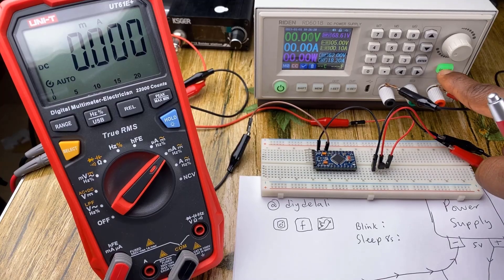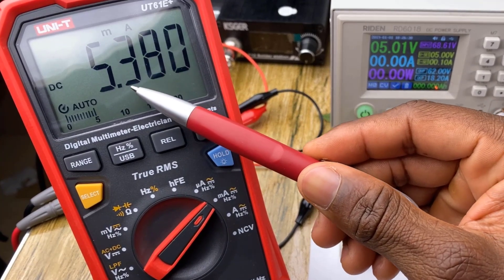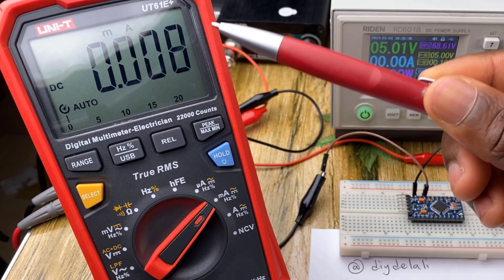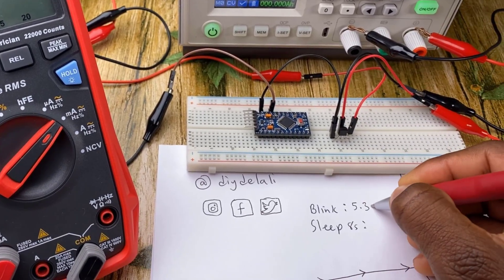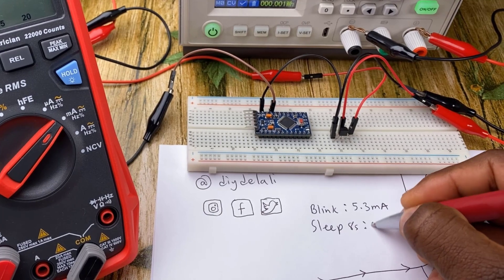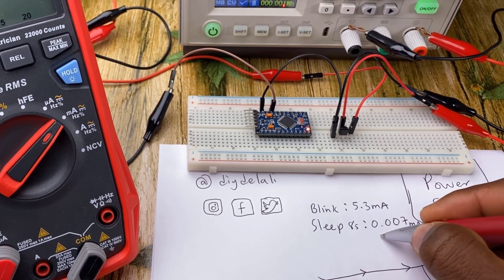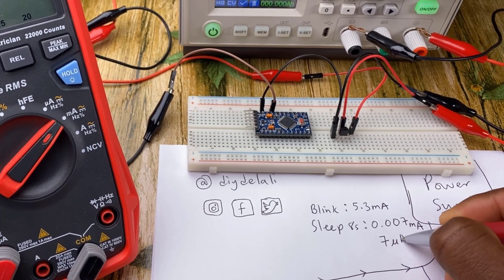So now turning this on, we can see the board draws a total of about 5.3 and when it's in sleep, it draws 0.007. This is equivalent to 7 microamps.